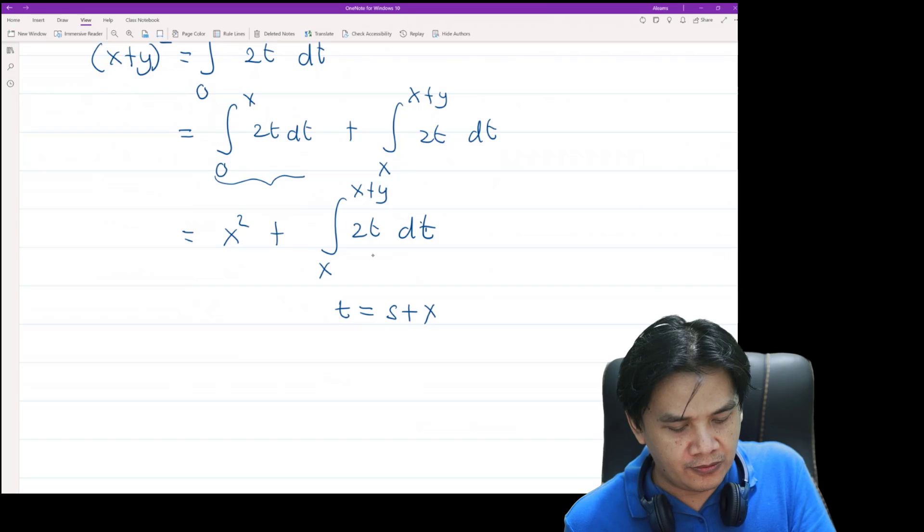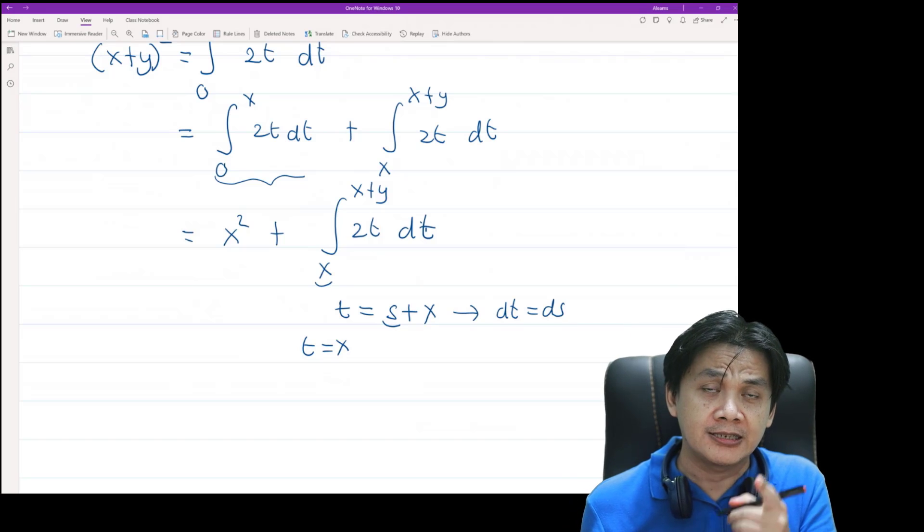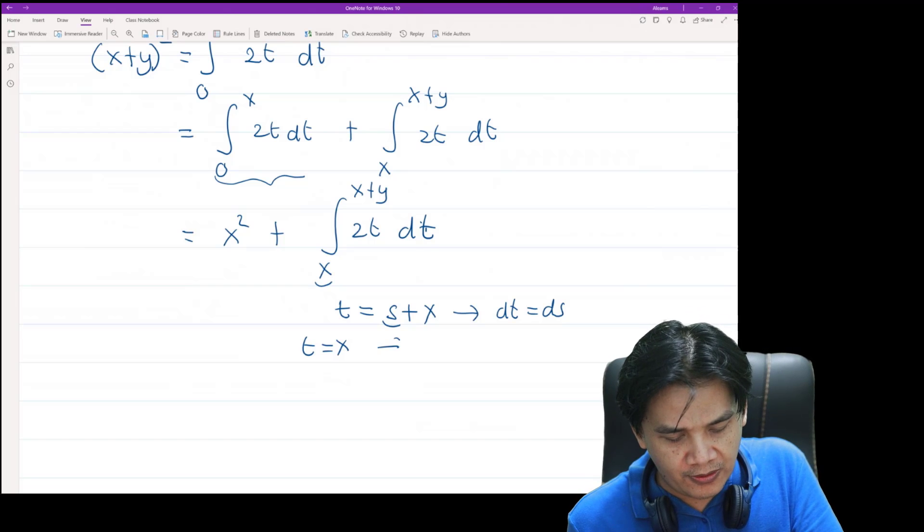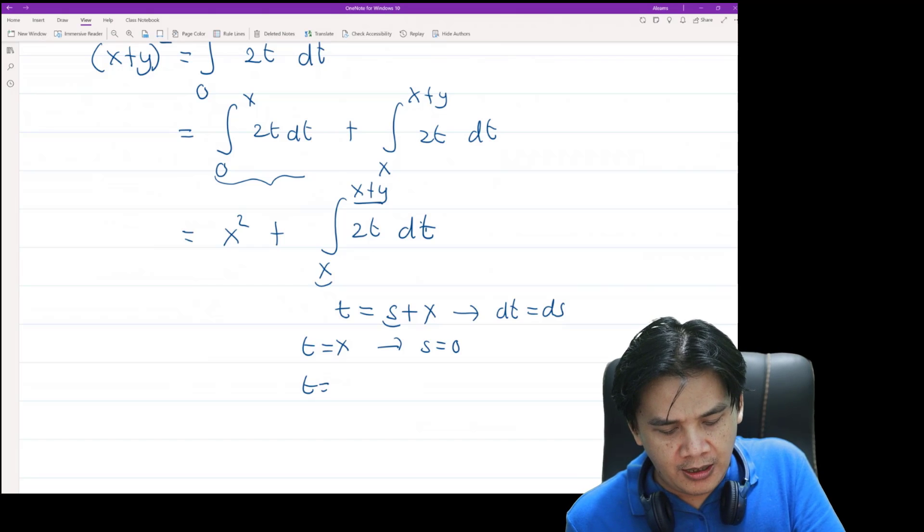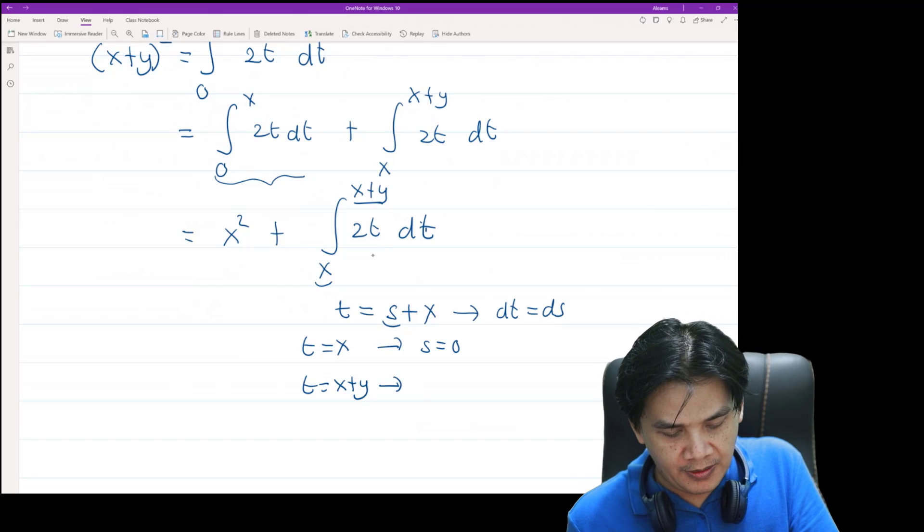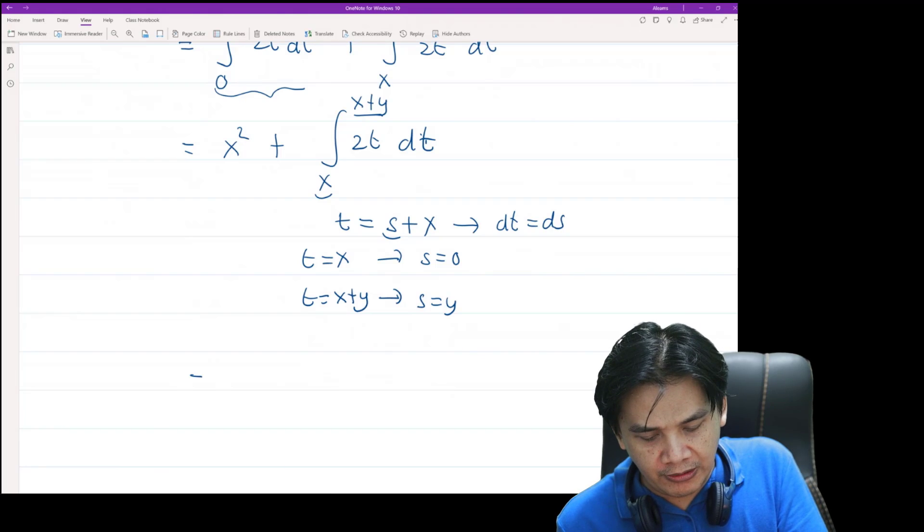When t is equal to x, then the value of s have to be 0, so s is equal to 0. When t is equal to x plus y, then s is equal to y. So therefore the integral can be rewritten as the integral from 0 to y.